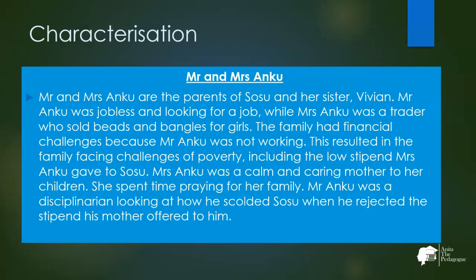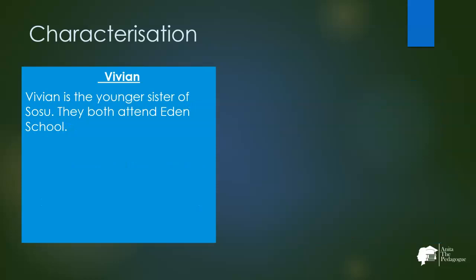Mr. and Mrs. Uncle are the parents of Sosu and his sister Vivian. Mr. Uncle was jobless and looking for work, while Mrs. Uncle was a trader who sold beads and bangles. The family had financial challenges, resulting in the low stipend Mrs. Uncle could give Sosu. Mrs. Uncle was a calm and caring mother who spent time praying for her family. Mr. Uncle was a disciplinarian, as seen when he scolded Sosu for rejecting the stipend.